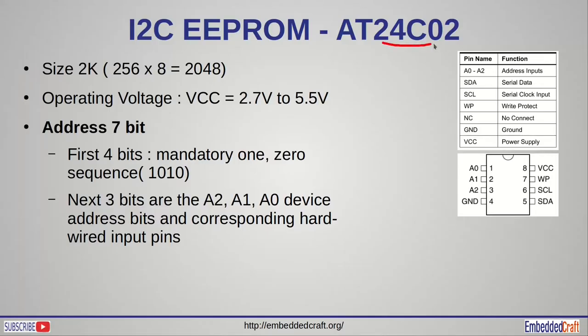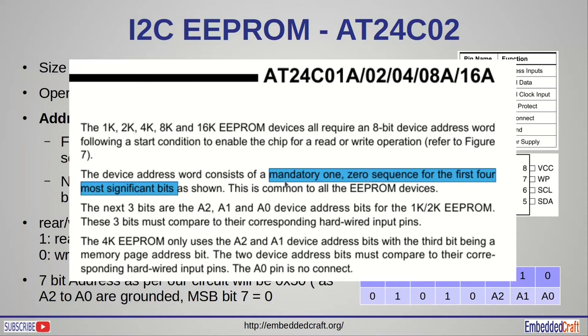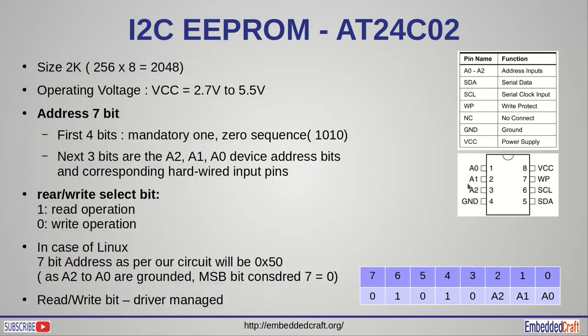We are using a 24C02 EEPROM from Atmel. Atmel was acquired by Microchip, and the user manual of this chip is available from the Microchip website. The AT24C02 size is 2K, meaning the total bits it can store is 2048. It is organized as words of 8 bits, giving 256 total words, and each word is randomly addressable. Referring to the datasheet, there will be mandatory 1 and 0 sequences for the first 4 most significant bits, and the next 3 bits correspond to A2, A1, and A0 lines. These 3 bits decide the address of the chip.